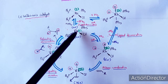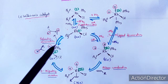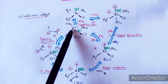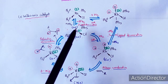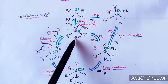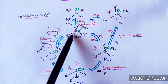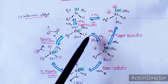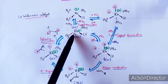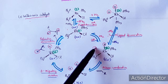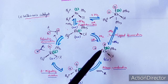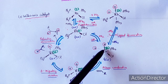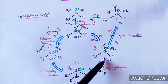After PPh3 dissociation, we have Rh(I) with two PPh3 and one Cl — a 14-electron system, down from the original 16-electron system. This vacant site allows hydrogen to oxidatively add to the Rh(I) center. After oxidative addition, two hydrides are attached to the rhodium, the oxidation state increases to Rh(III), and it again becomes a 16-electron system.